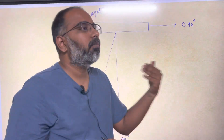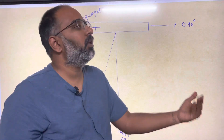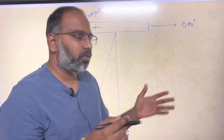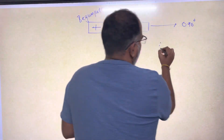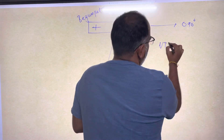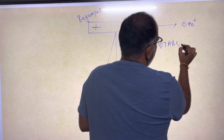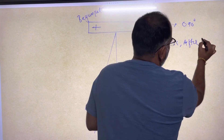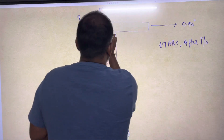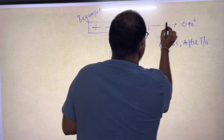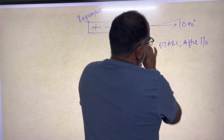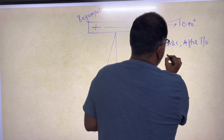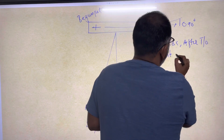Then climb 5000 feet and proceed to your destination. Let me write this down. Your aircraft is Victor Tango Alpha Bravo Charlie. After takeoff, that means after taking off, you have to climb straight ahead on 090. After takeoff, climb straight ahead on 090.